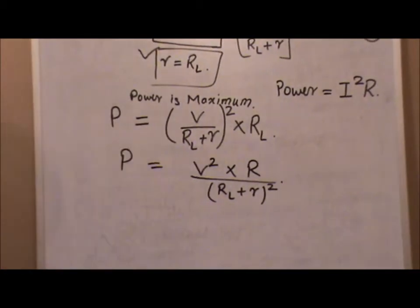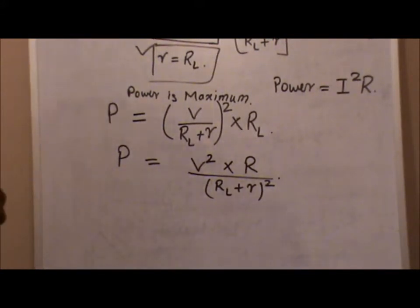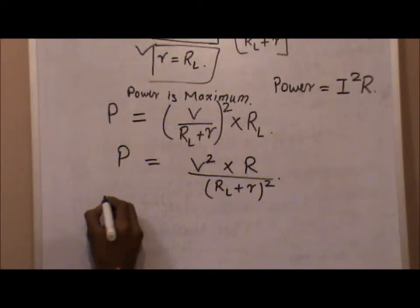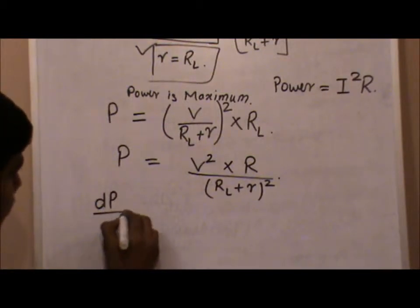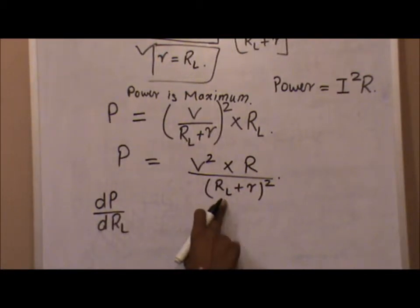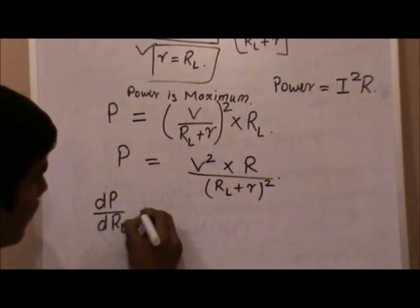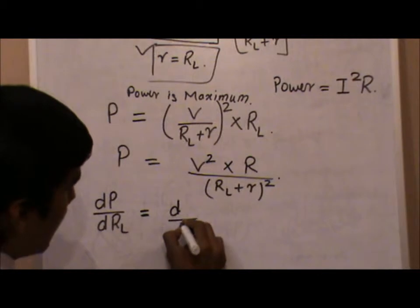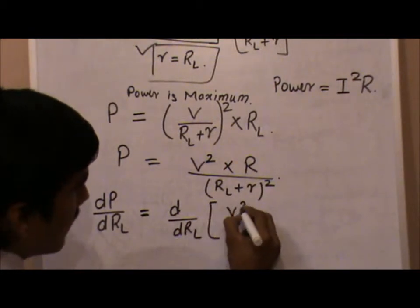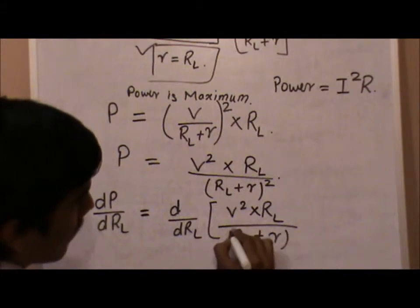Now, as we studied in class 10th, 11th, or 12th, we covered maxima and minima. For any equation to reach a maximum or minimum, we calculate the point of maxima or minima by differentiating once with respect to a variable. Since load resistance RL may be variable, we differentiate P with respect to RL.